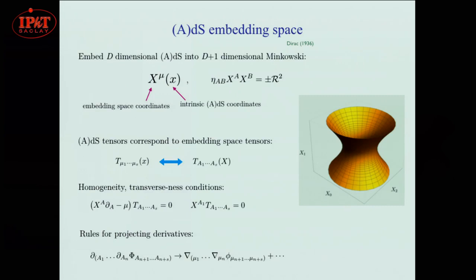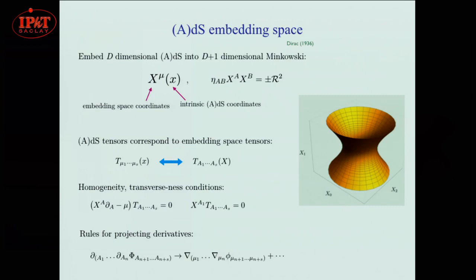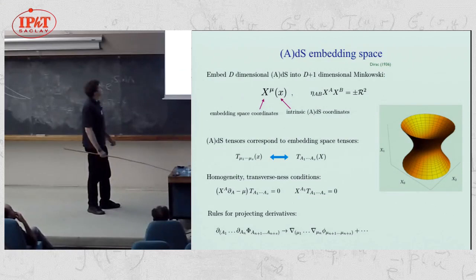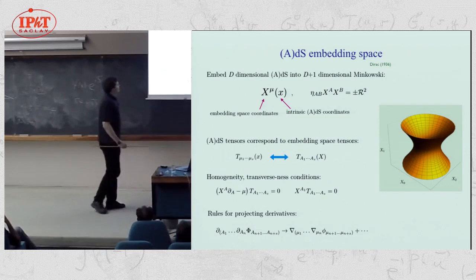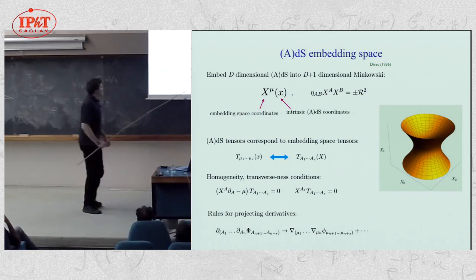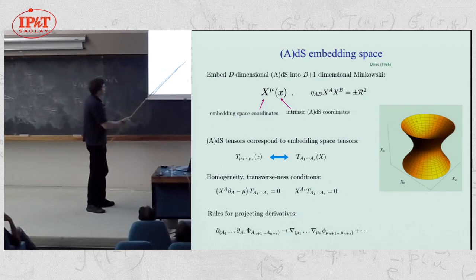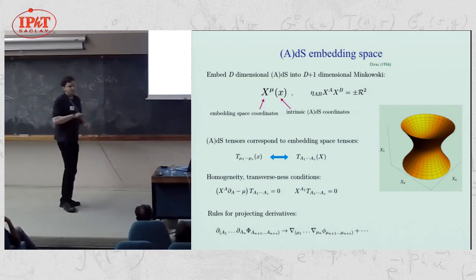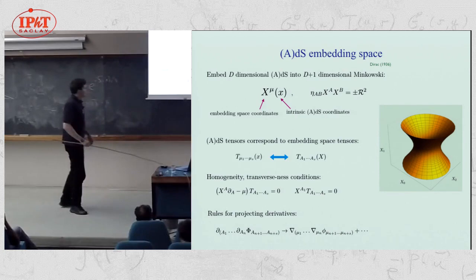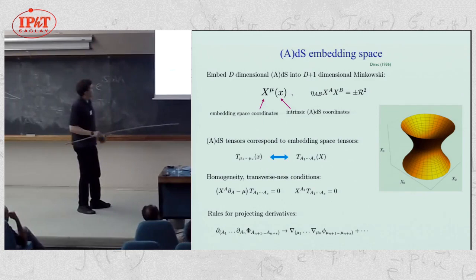In talking about ADS space, it'll be convenient to use the embedding picture. We think of ADS or de Sitter as a hyperboloid embedded in a Minkowski space of one higher dimension. We can talk about tensors on ADS space by extending them to tensors in the ambient space. To make this correspondence unique, we demand the ambient space tensors satisfy a homogeneity condition — specifying a homogeneity degree mu — and a transversality condition. Once enforced, there's a one-to-one correspondence between tensors in ambient space and tensors on ADS space.